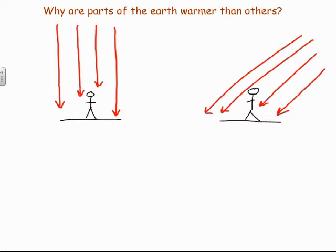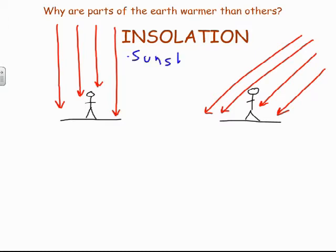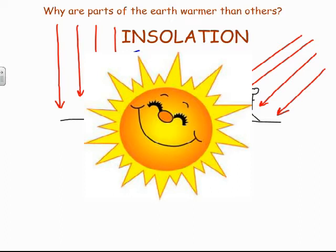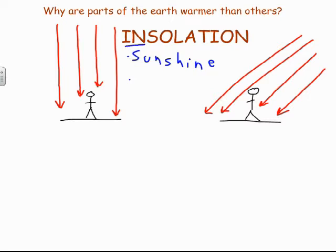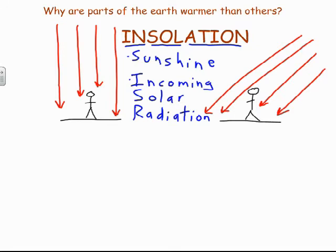This energy is known as insolation, and insolation is just a really fancy way of saying sunshine. Whenever you see the word insolation, feel free to cross it out and write the word sunshine in its place — it's the same thing. Insolation stands for 'incoming solar radiation.' So insolation is just sunshine — the energy from the sun.